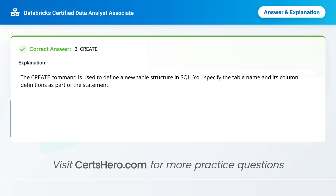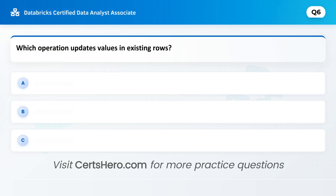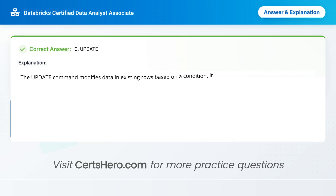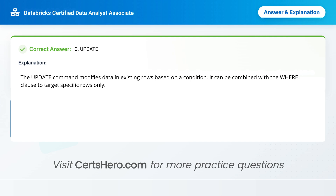Here's one you shouldn't miss. Which operation updates values in existing rows? A. Delete. B. Merge. C. Update. Correct answer is C: UPDATE. The UPDATE command modifies data in existing rows based on a condition. It can be combined with the WHERE clause to target specific rows only.